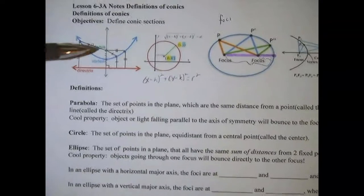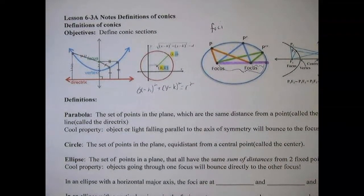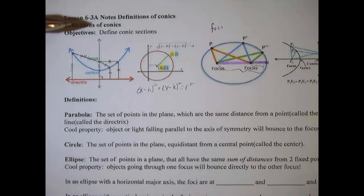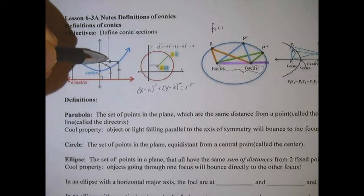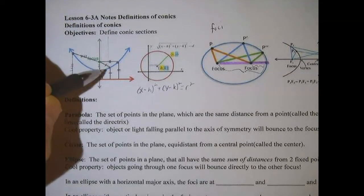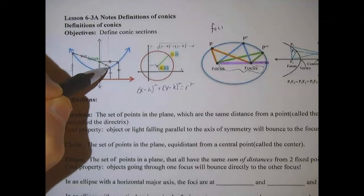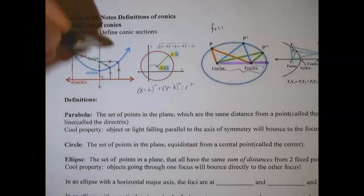And so the property there is what allows us to have satellite dishes, it's what allows us to have headlights, they're all parabolic in their general shape. So if you imagine this is a satellite dish, and you imagine rays of light coming into the satellite dish, guess where they're all going to bounce?